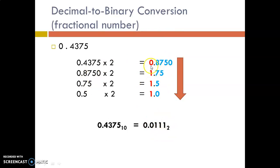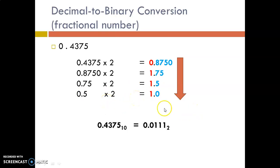We are going to neglect the integer and take only the fractional part: 0.870. Again, multiplied by 2, that results in 1.75. Neglect the integer, take only 0.75 multiplied by 2, which equals 1.5. Neglect the integer; take 0.5 multiplied by 2, which equals 1.0. We cannot proceed further. Taking the integers in the downward direction gives the binary equivalent: 0.0111. This is how we convert a decimal number to a binary number.